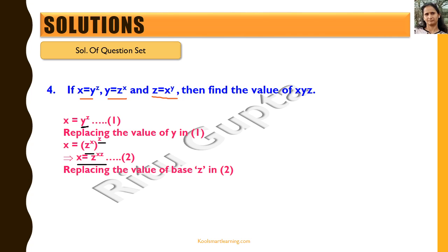We then replace the base z only — substituting z equals x raised to power y — giving x equals x raised to power y, whole raised to power xz, which becomes x equals x raised to power xyz. That means xyz equals 1, because x raised to power 1 equals x raised to power xyz. So xyz equals 1 is the answer.